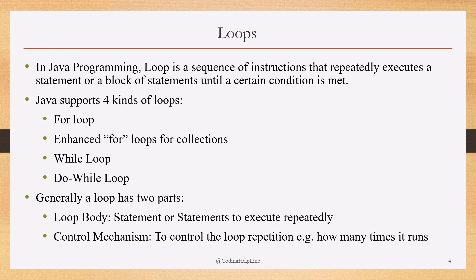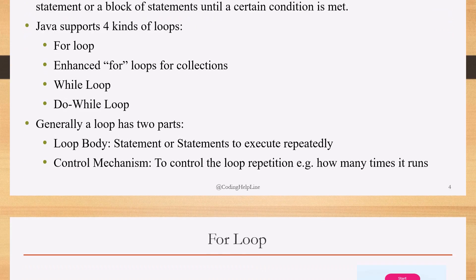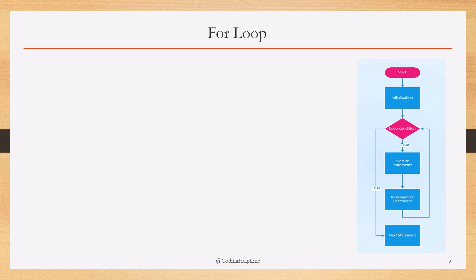The do-while loop executes the body of the loop before the condition is evaluated. Generally, a loop has two parts: the loop body — statements to execute repeatedly — and a control mechanism to control loop repetition and how many times it's supposed to run. Without this control mechanism, the loop will run infinitely.